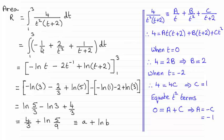As you can see, minus 1 over t is minus natural log of t. 2 over t squared turns out to be minus 2t to the minus 1. And 1 over t plus 2 is natural log of t plus 2.